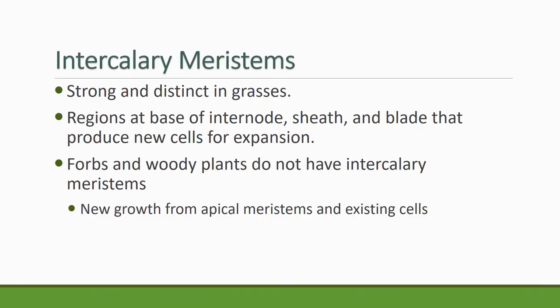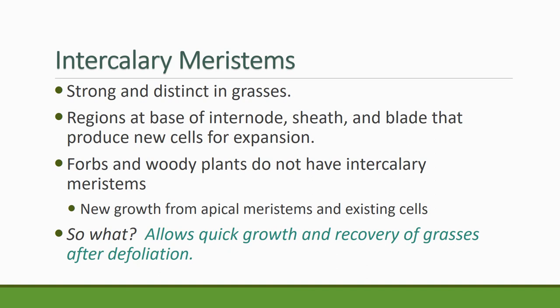Now let's turn our attention to intercalary meristems. Again, intercalary meristems are in between — they're very strong, distinct, and important in grasses. They're the region at the base of the internode, sheath, and blade that produce new cells for expansion, continuing to create cells so the sheath, internode, and blade expand upward. Forbs and woodies do not have intercalary meristems — all new growth has to come from apical or axillary buds and existing cells. Grasses are really well adapted to grazing because they have these intercalary meristems that enable quick growth and recovery after defoliation.